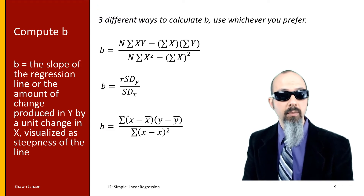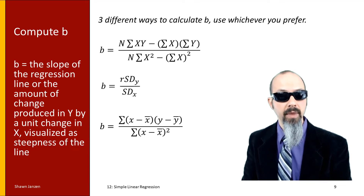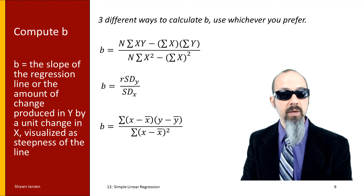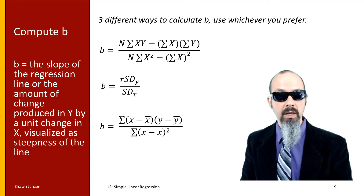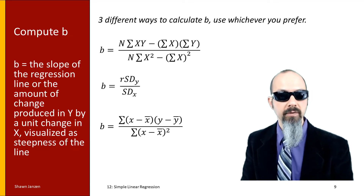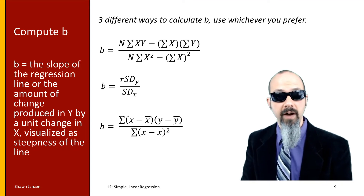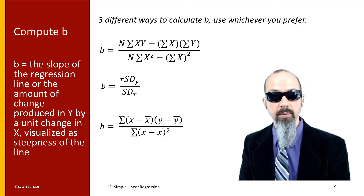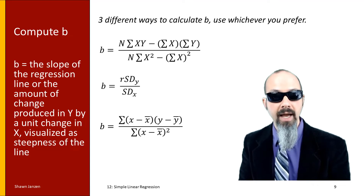Now, when we want to compute b1 — the slope — there are a few ways to do it manually. On the screen are three different formulas for computing b1, and all three give you the exact same value. I've shown all three so that if you look at different books or internet sources and see different versions, you won't be confused. An Excel file will be provided in class showing the same data points computed each way, proving they all produce the same slope value.